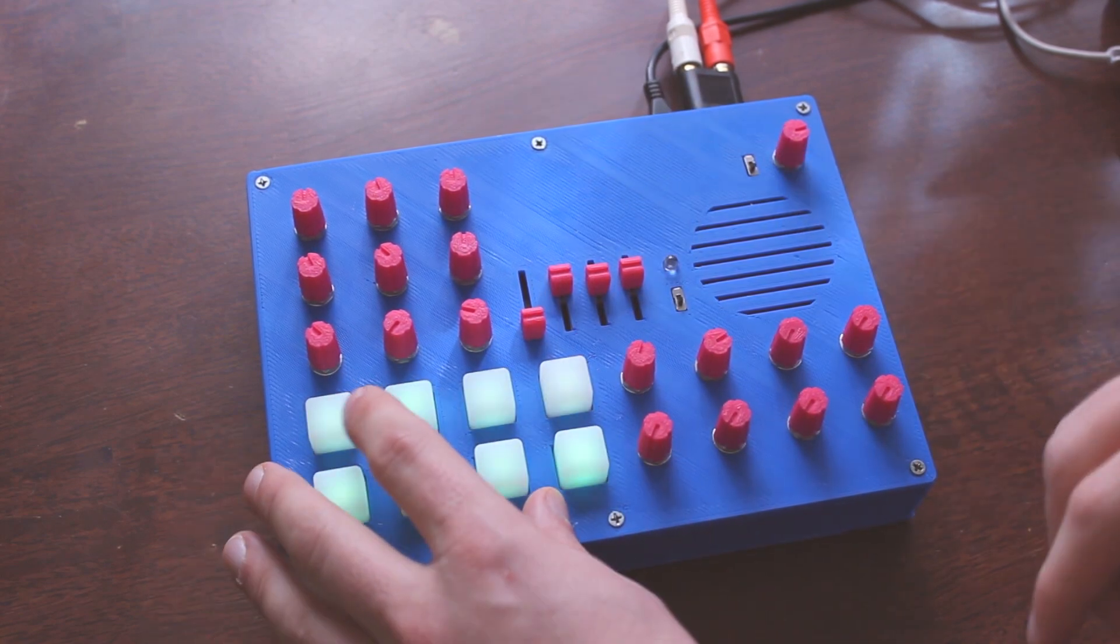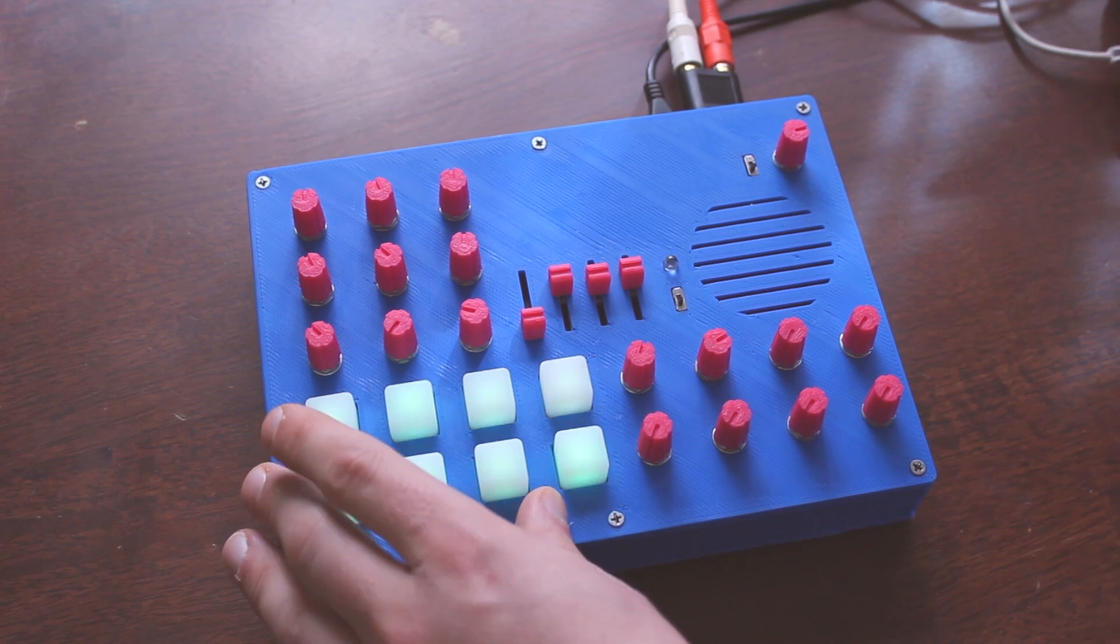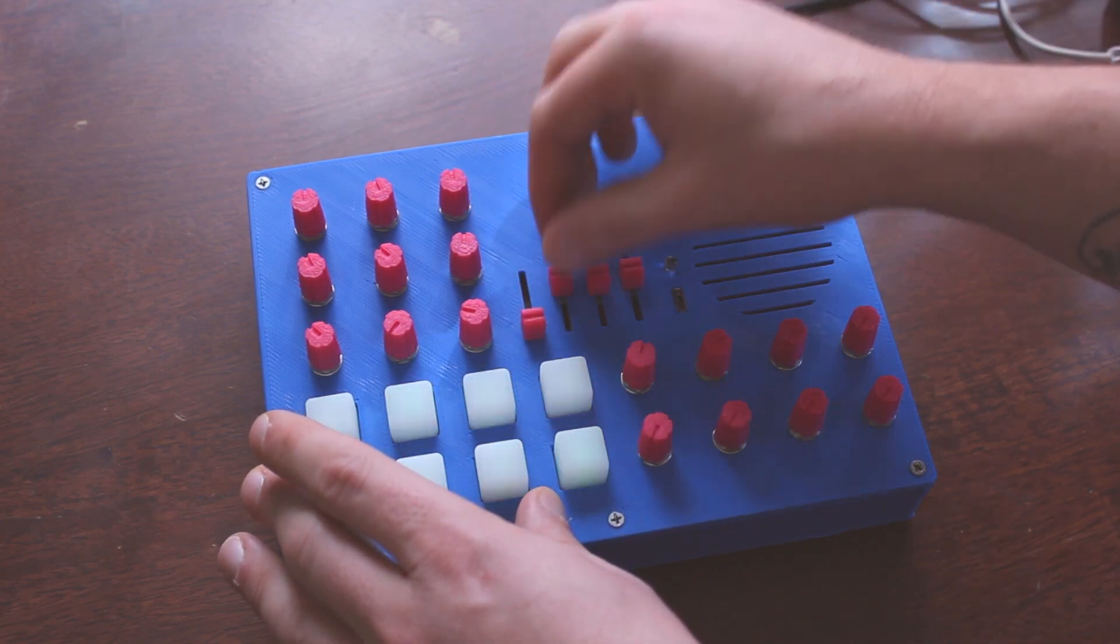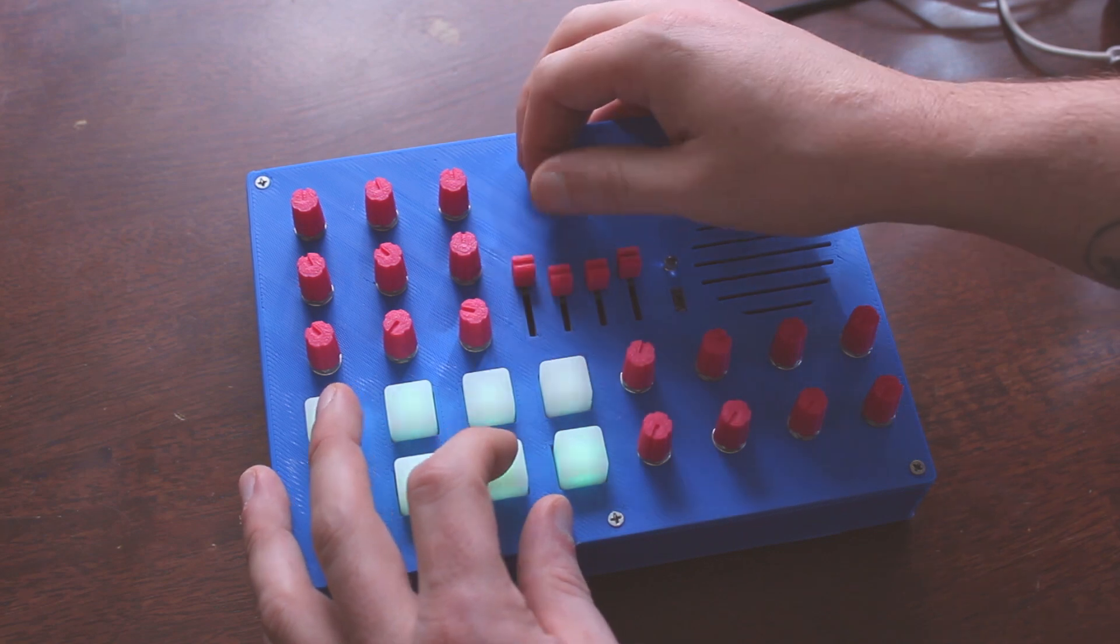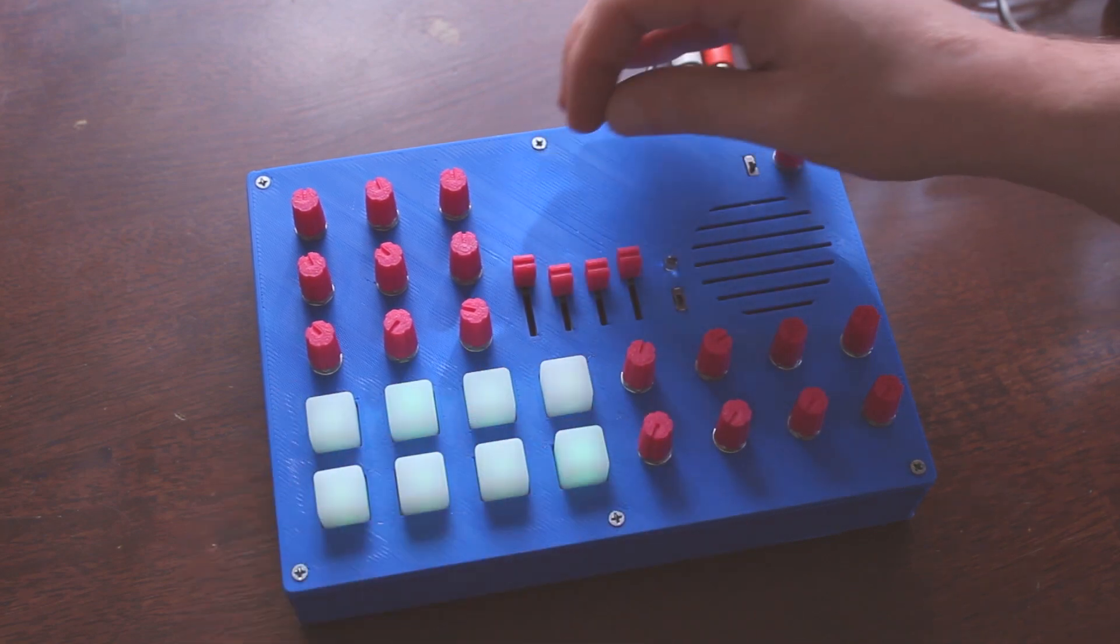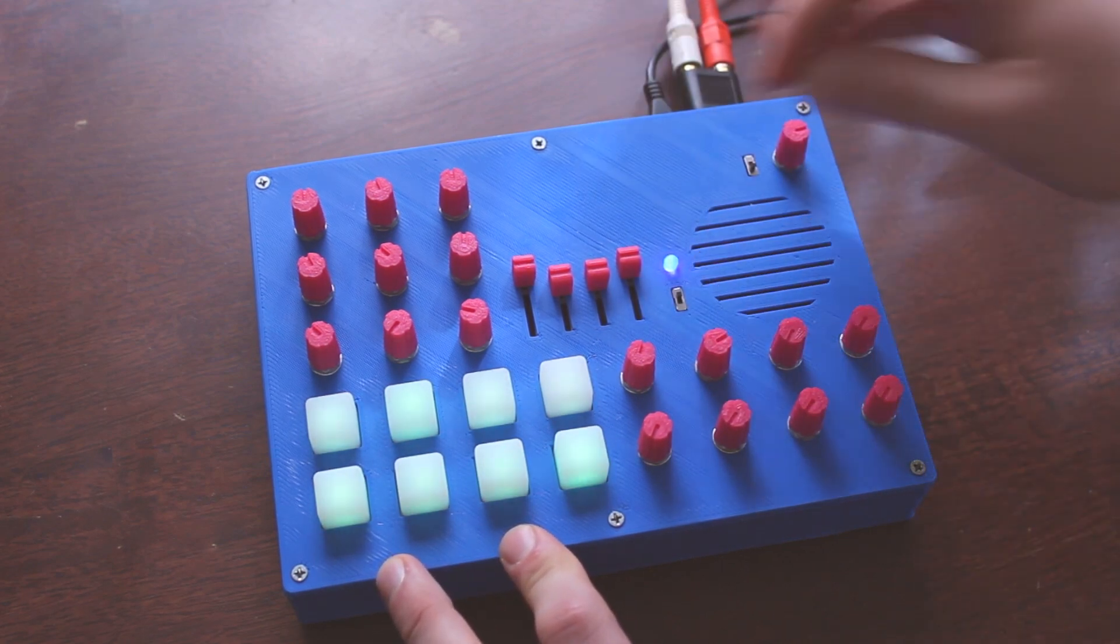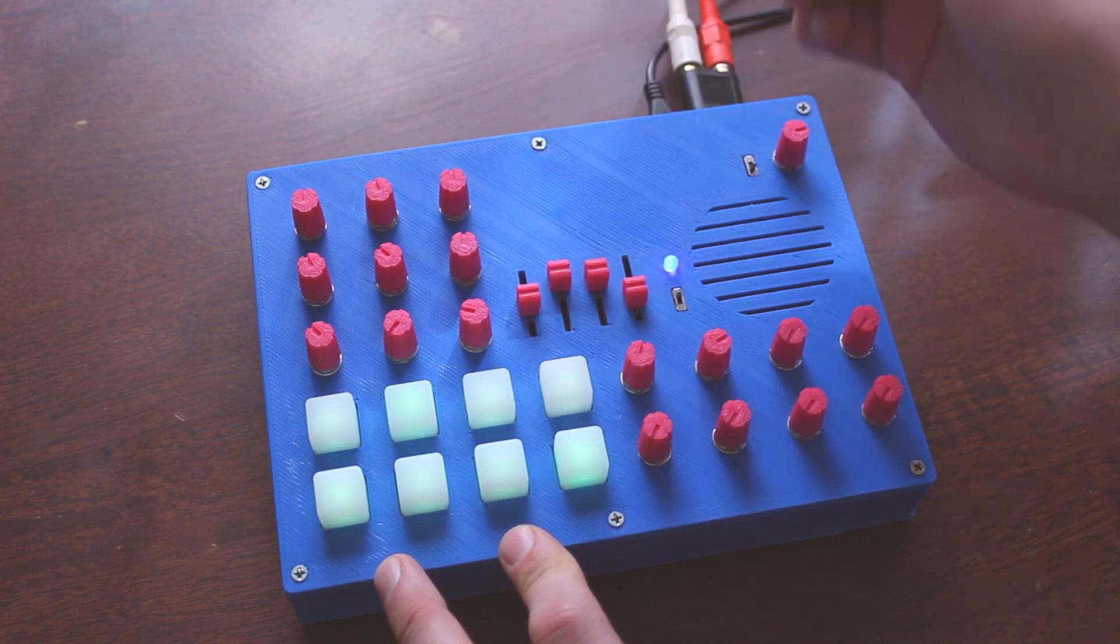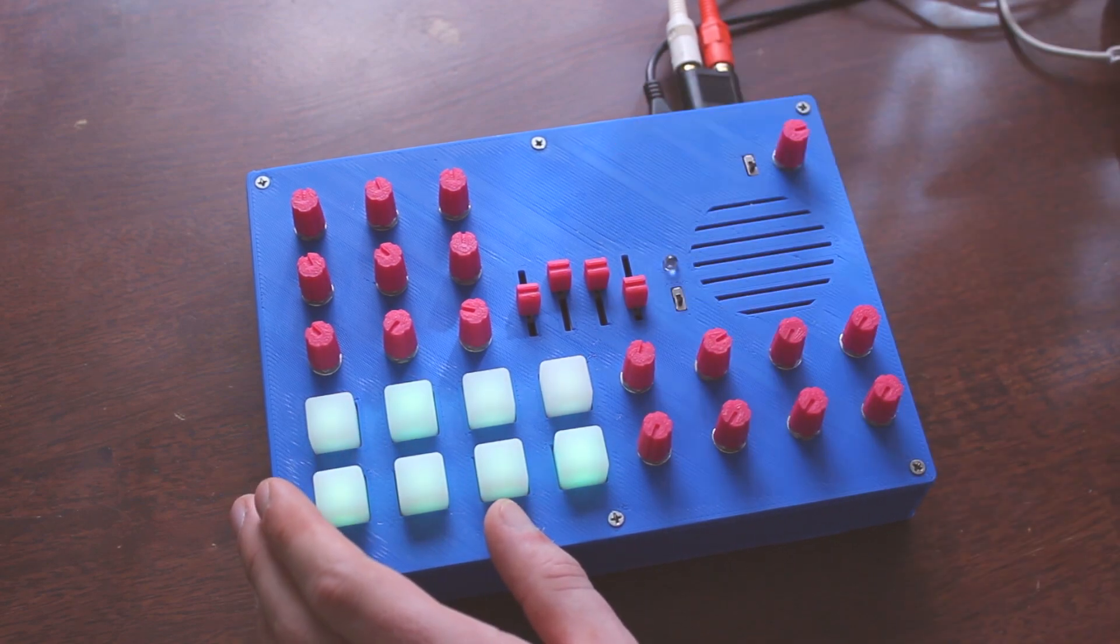And each button has an independent amp envelope and filter envelope, which we'll get into actually right now. This is our regular amp. We want to bring it in slow with the attack. And then if we flip this switch here, you see this LED come on here, and then now we are actually editing the filter envelope. So, two envelopes there, just with the switch.